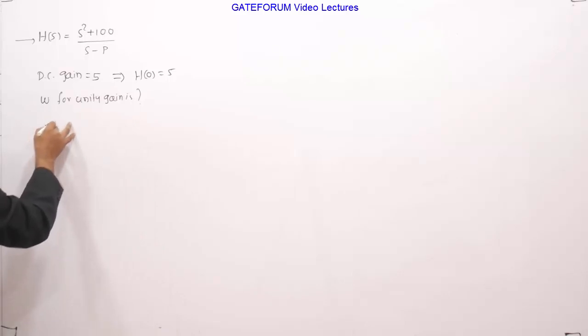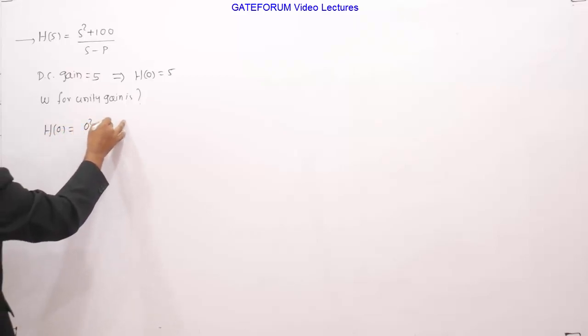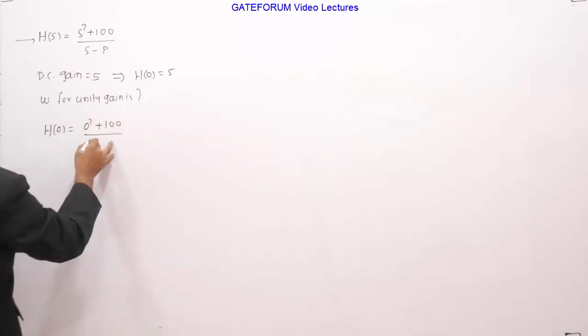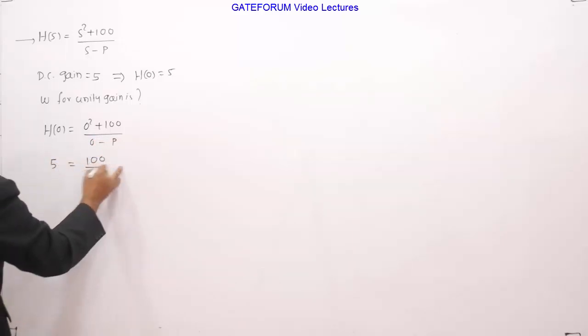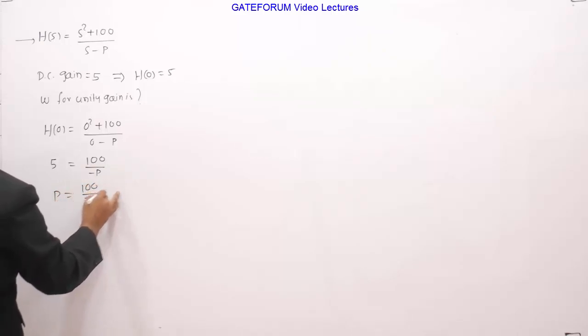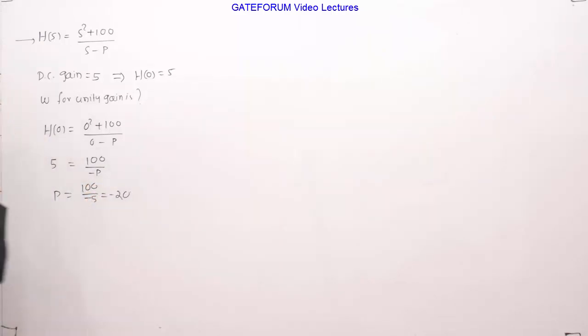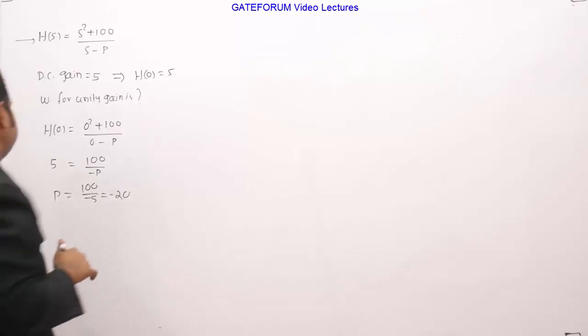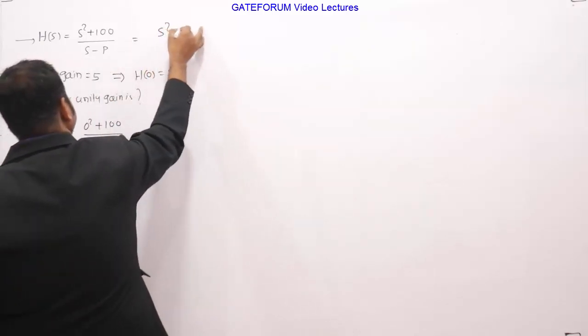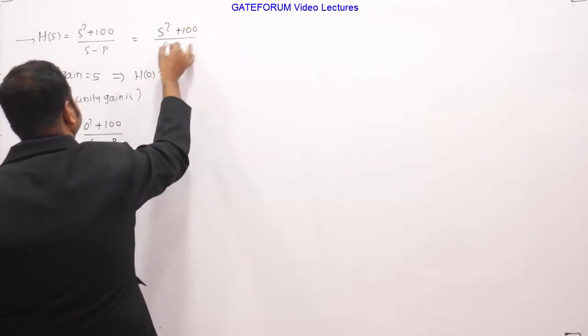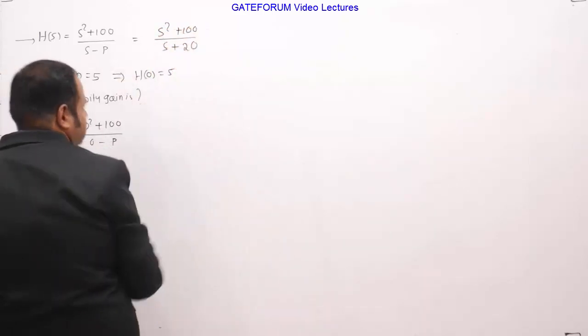h of 0 is 5. So h of 0 is equals to 0 square plus 100 divided by 0 minus p. So this is 5 equals to 100 by minus p. So p is equals to 100 by minus 5 and this equals to minus 20. So p equals to minus 20.